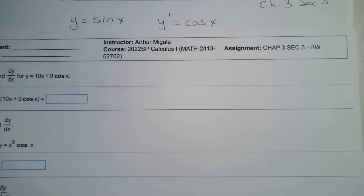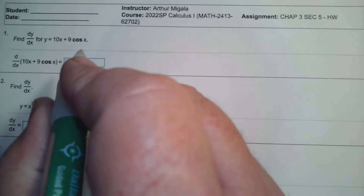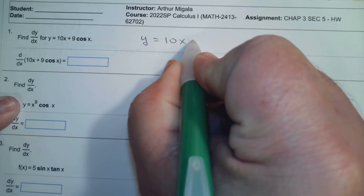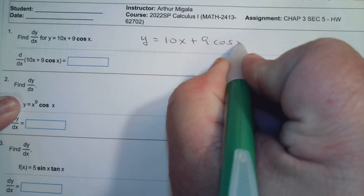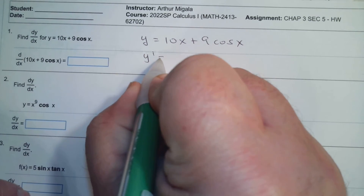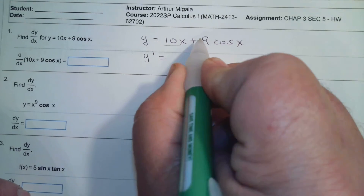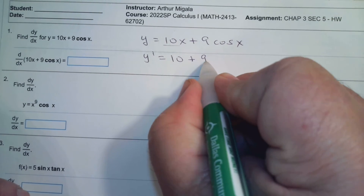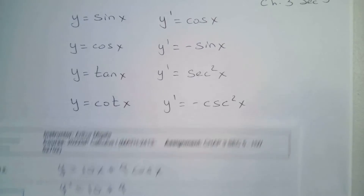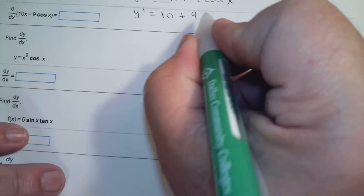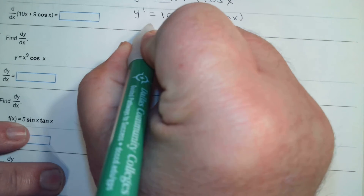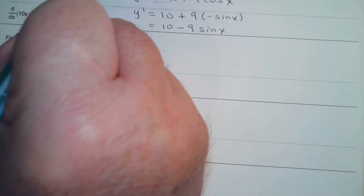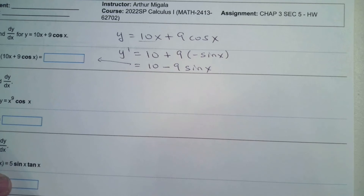Let's look at the first homework problem. y equals 10x plus 9 cosine x. Since it's two separate terms separated by plus, we use the sum rule. Derivative of 10x is just 10. 9 is a constant so leave it there. Derivative of cosine is negative sine. So our answer is 10 minus 9 sine x.